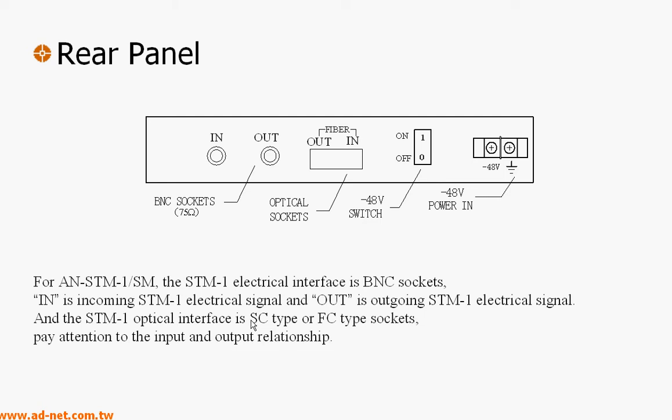Rear panel. On the rear panel, there are two different connectors. There's a BNC socket, a 75 ohm socket, where you can see it's in and out, and that's the electrical interface part of the signal. And there is an SC connector for the fiber optical connector. And there is the 48 DC volt switch. And you can order the equipment also in 220 and 110 for South America and USA applications.